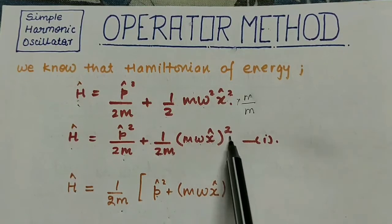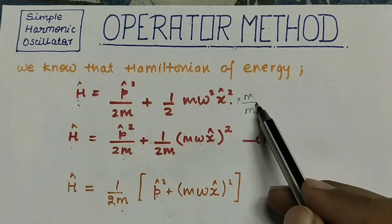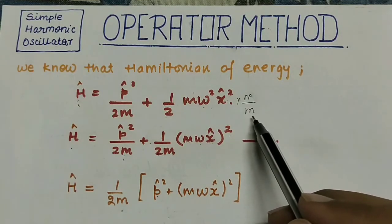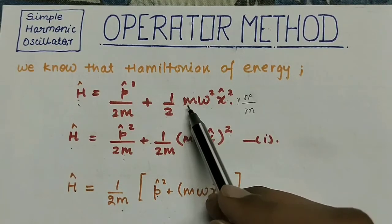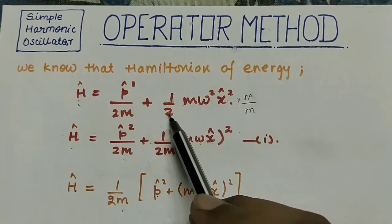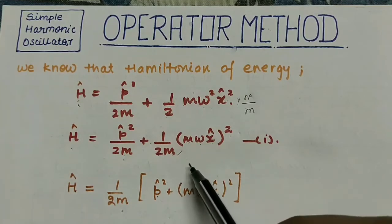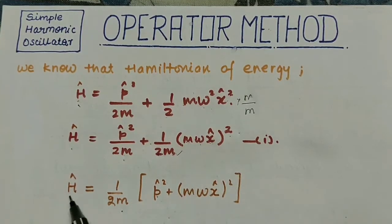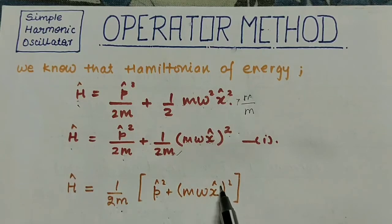In the previous step I multiplied m in the numerator and denominator, so m times m becomes m², which combines later as (mωx-cap)², and the denominator has 1 over 2m. The expression then becomes: H = 1 over 2m times (p-cap² + (mωx-cap)²).